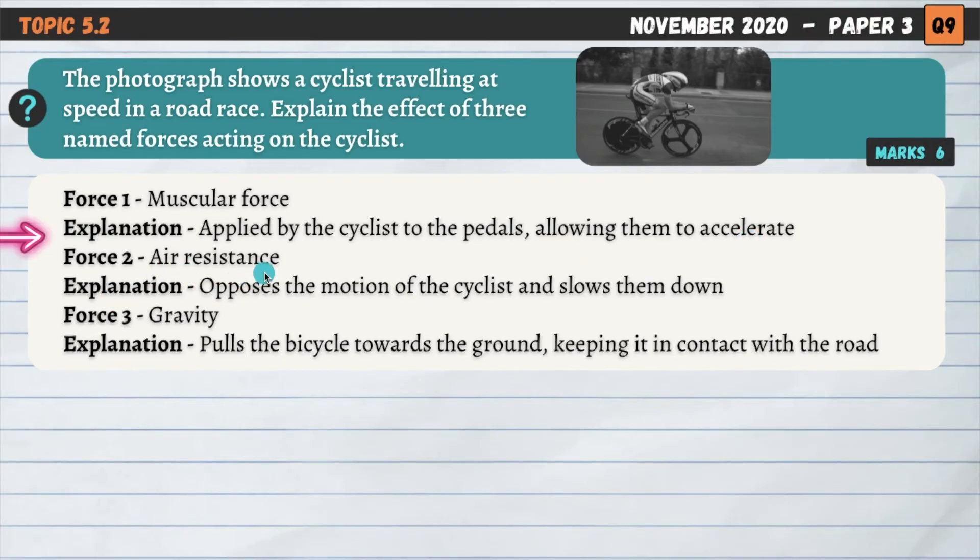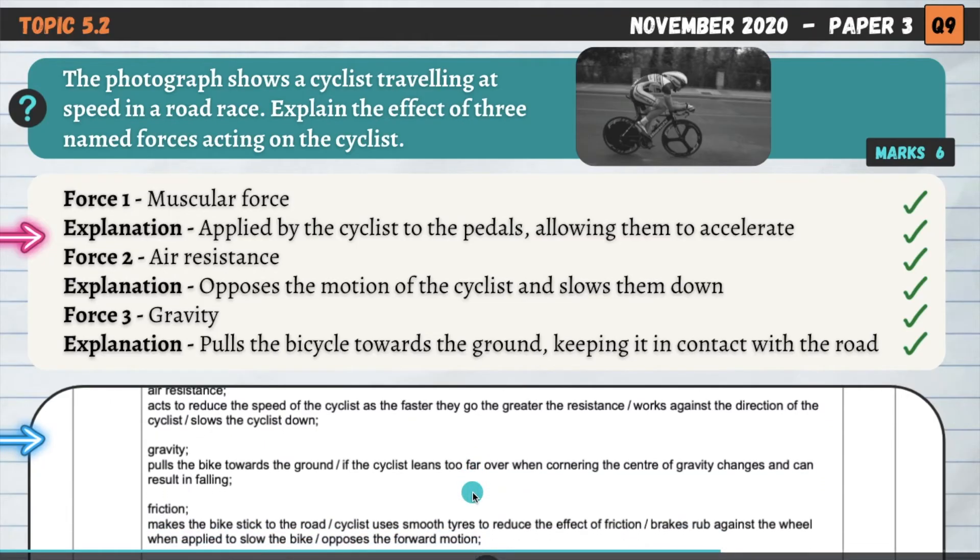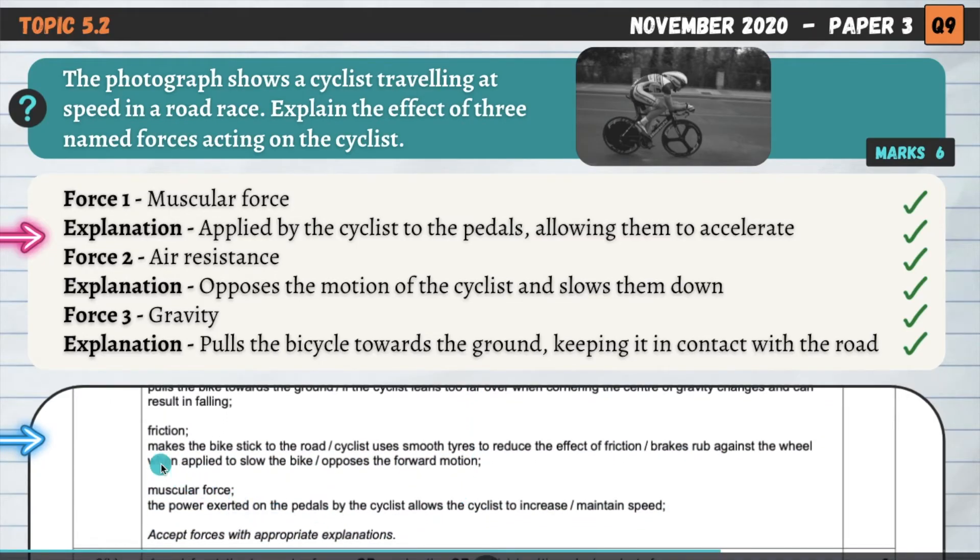Air resistance, how does that influence the cyclist? Well, it opposes the motion of the cyclist and slows them down, particularly at higher speeds. And then finally, gravity. This pulls the bicycle towards the ground and keeps it in contact with the road. Let's have a quick look at the mark scheme here. So we could have gone for air resistance, gravity, friction was another one that we didn't look at so far, and then muscular force. So friction, this makes the bike stick to the road. The cyclist may use smooth tires to reduce the effect of friction. So that's one way in which our knowledge of friction could potentially influence the cyclist. We could also say that the brakes rub against the wheel when applied and that slows down the bike. So that's an example of how friction acts on the cyclist. It's particularly important during braking.